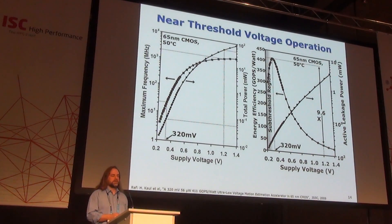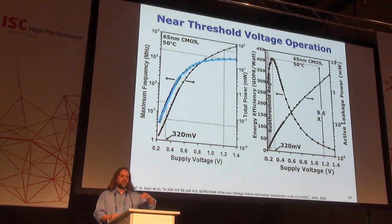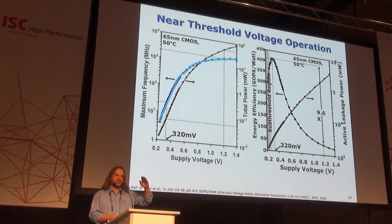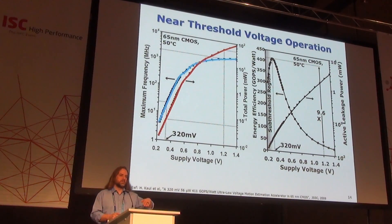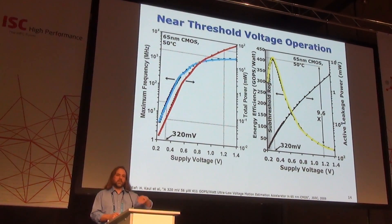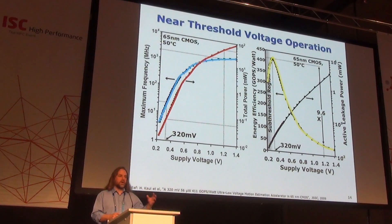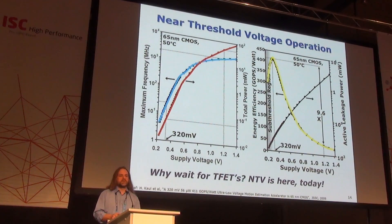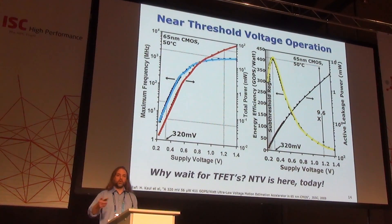I can also look at near-threshold voltage operation. What you're looking at is frequency in blue versus voltage across the bottom. Maximum voltage gives nice high frequency, but as I bring the voltage down, frequency correspondingly falls. I can also look at the power consumed at this stage of operation and the energy efficiency — how many operations did I do in a watt or milliwatt envelope. As I pulled that voltage down, even though my frequency dropped, my energy efficiency shot way up. I don't need a T-FET to get ridiculous energy efficiency — I can do the same thing with regular CMOS. I just have to pay for it in area, or frequency, needing more cores to get the same aggregate performance, even though each core is fantastically more efficient.